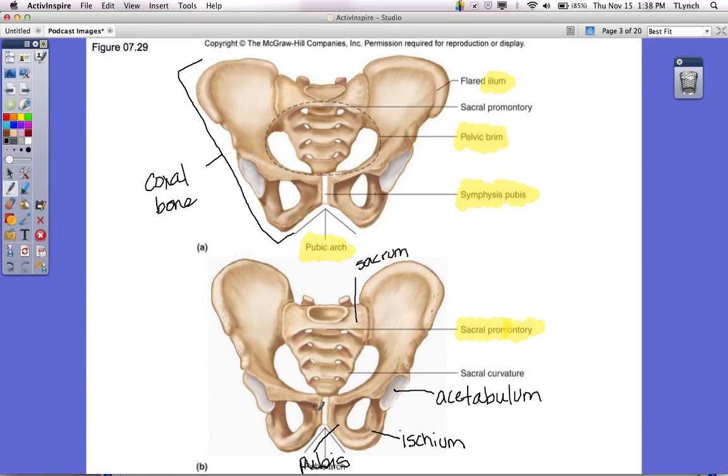So, these large holes here. This is, again, it's a space for blood vessels and nerves to be able to travel through. Alright, so now we're going to move on to the thoracic cage.